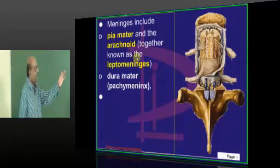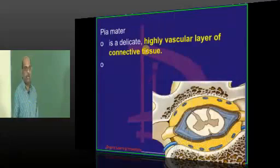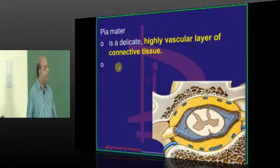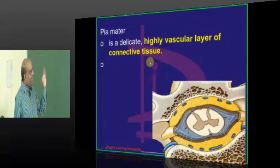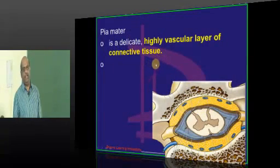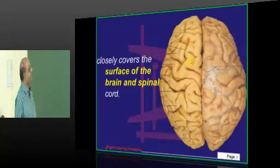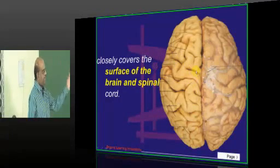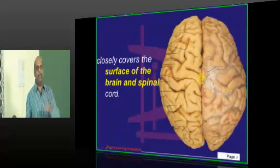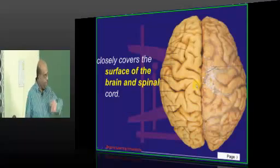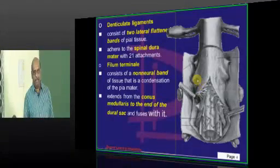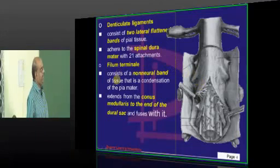Pia and arachnoid are called leptomeninges. What is pia? Pia is that highly vascular connective tissue, very delicate in nature, and it closely covers the surface of the brain and the spinal cord. Directly abutting onto the brain and the spinal cord is the pia mater — highly vascular.